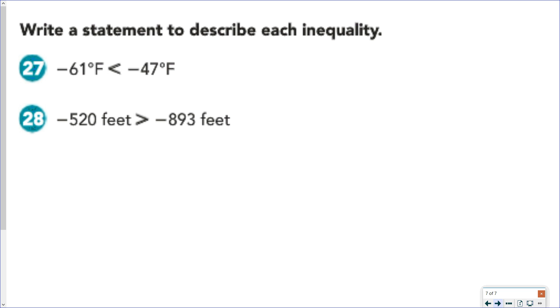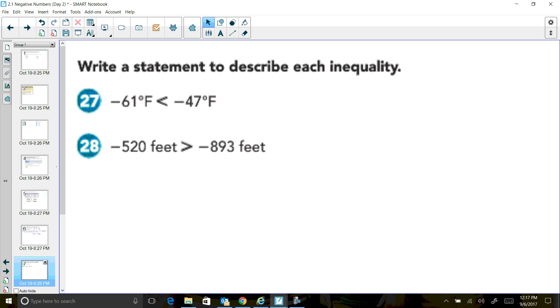The key in both statements is making sure that you have some sort of language in there that makes a comparison. You also want to be creative. You don't just want to write negative 61 is less than negative 47. Negative 520 is greater than negative 893. Be creative. Have a little bit of fun with these. But that's our lesson for today, and hopefully this helps. Thank you.